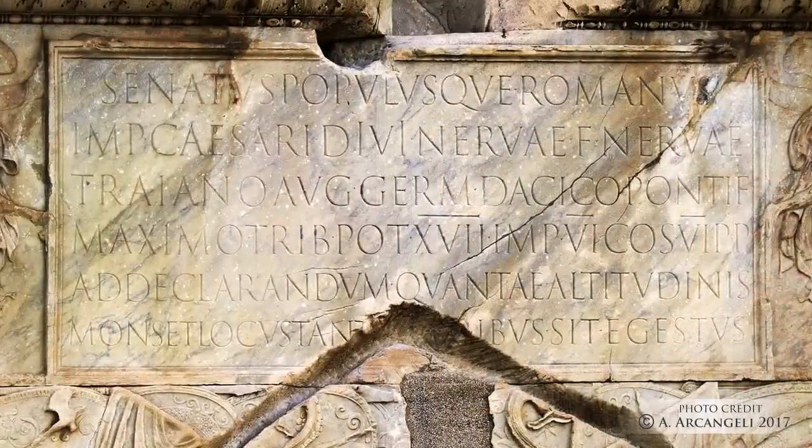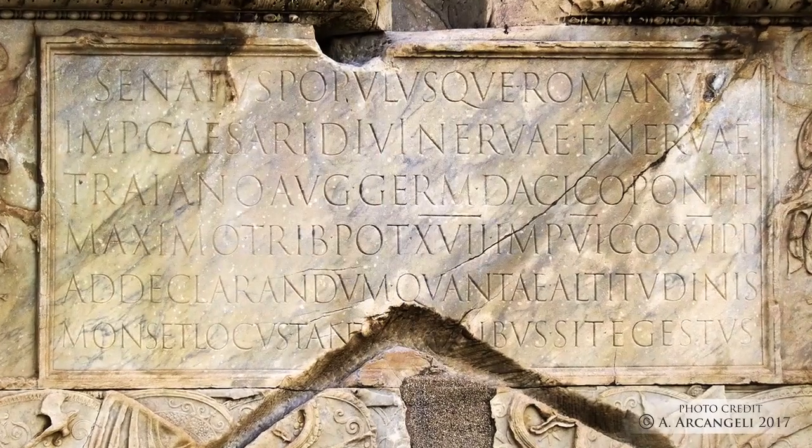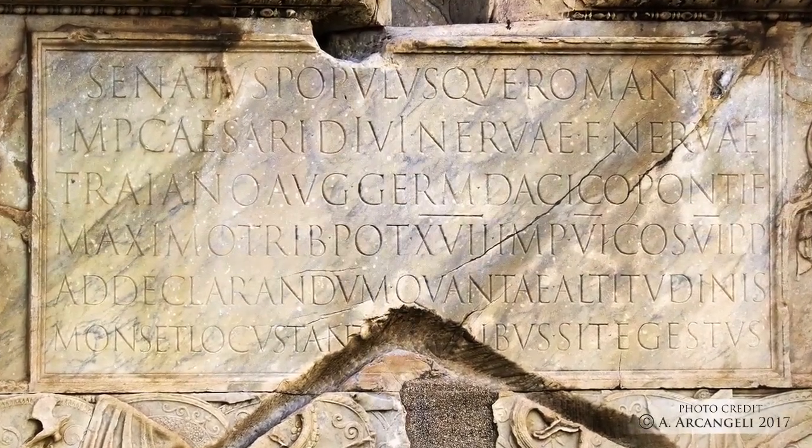The alphabet that we all use today is referred to as the Roman alphabet, and this photo shows us what is arguably the best example of it dating back almost 2,000 years. This is the Trajan column inscription in ancient Rome.